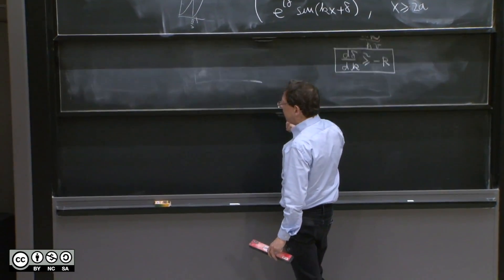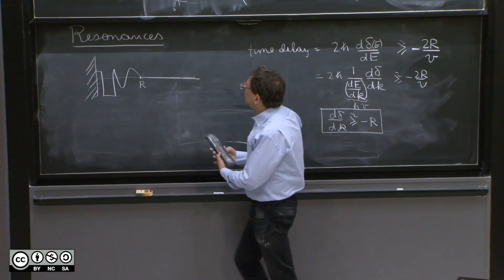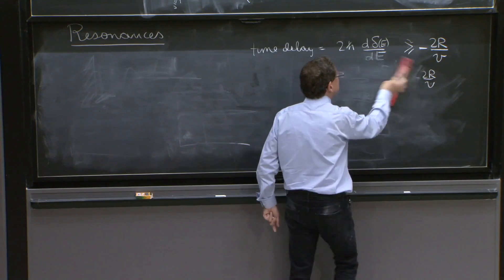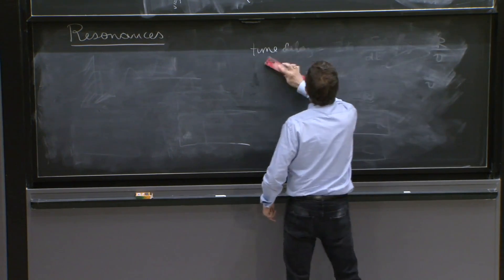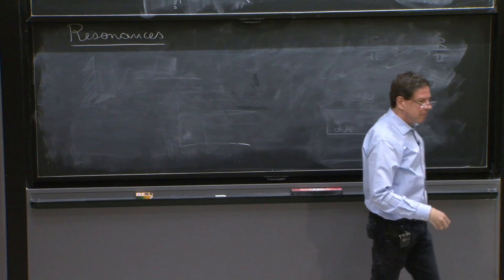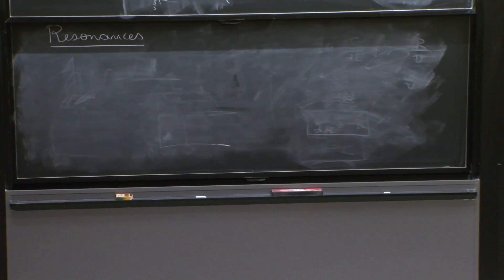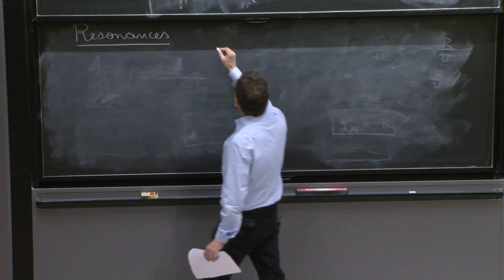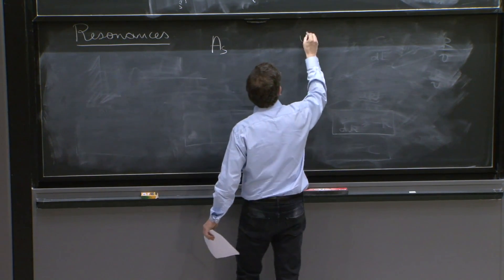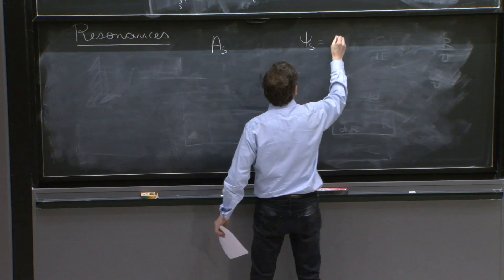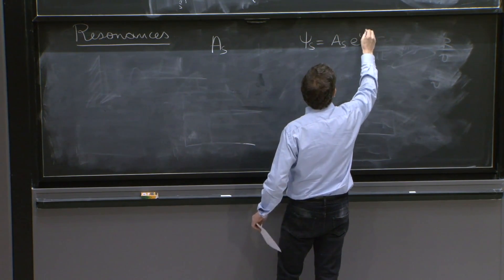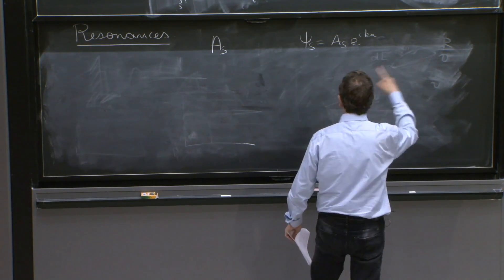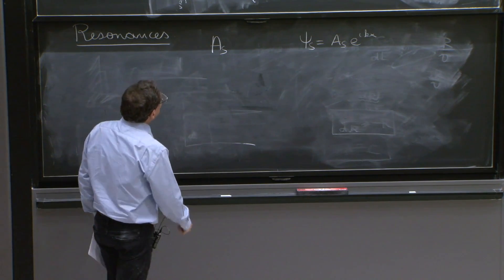So I want to go a little further to try to put resonances in a more intriguing footing, and that you can play with them if you're at some point interested. So let's think of the scattering amplitude that we had. We had As, remember, the scattered wave was As e^(ikx). Yes, it's that direction. And what was As?